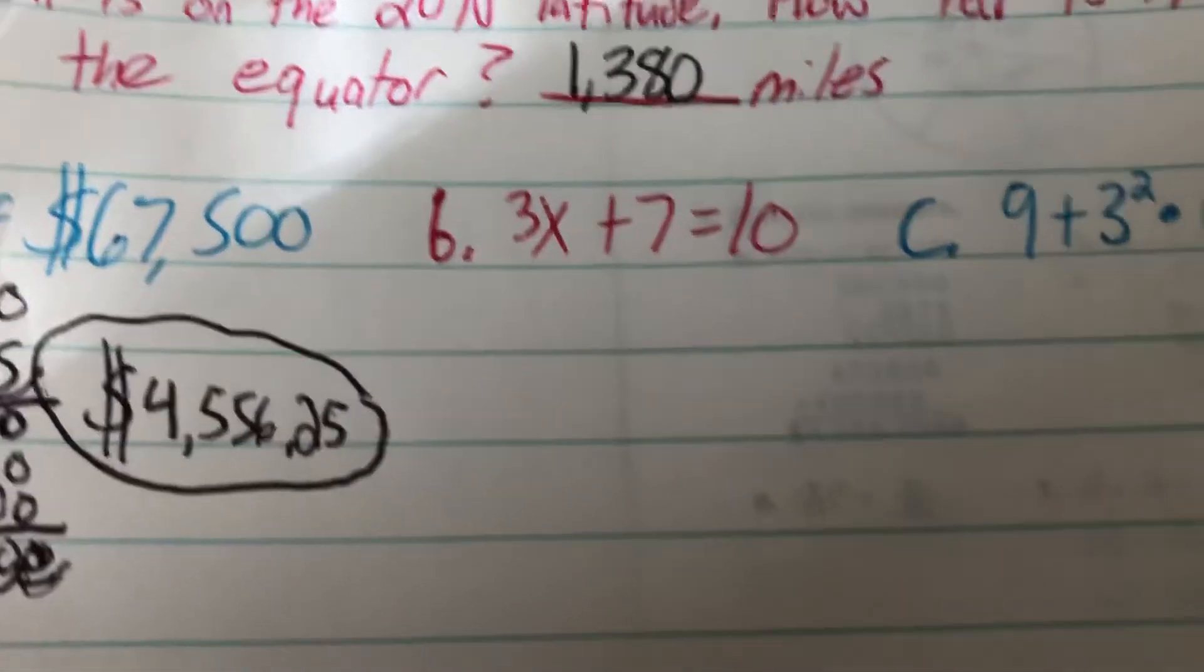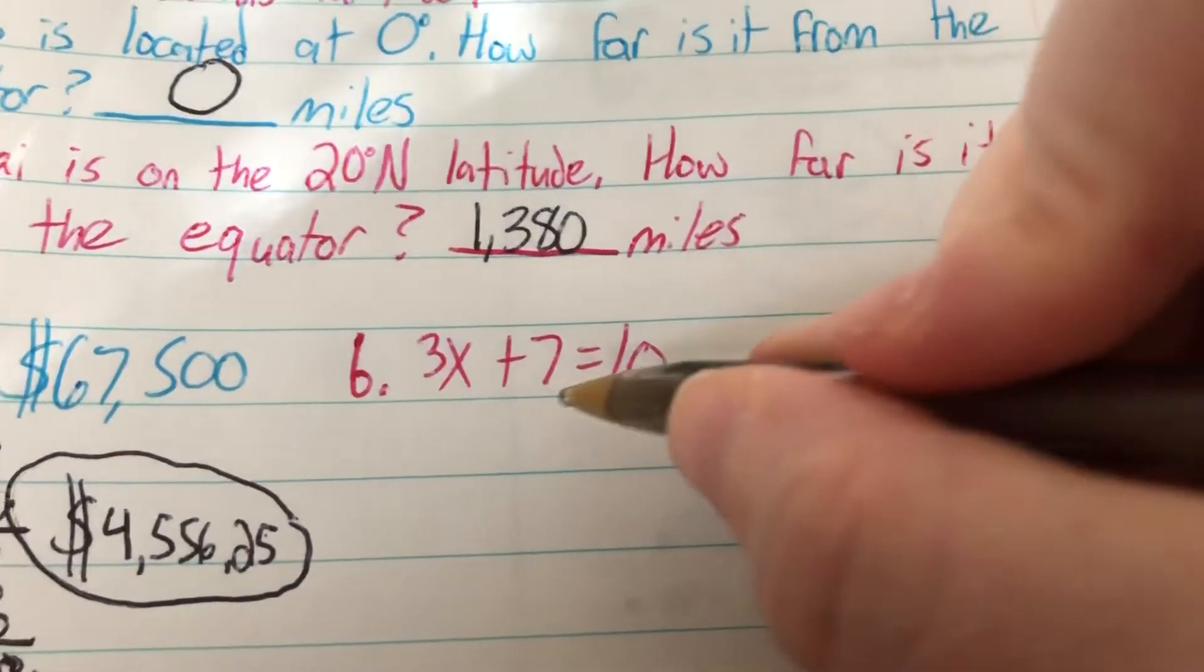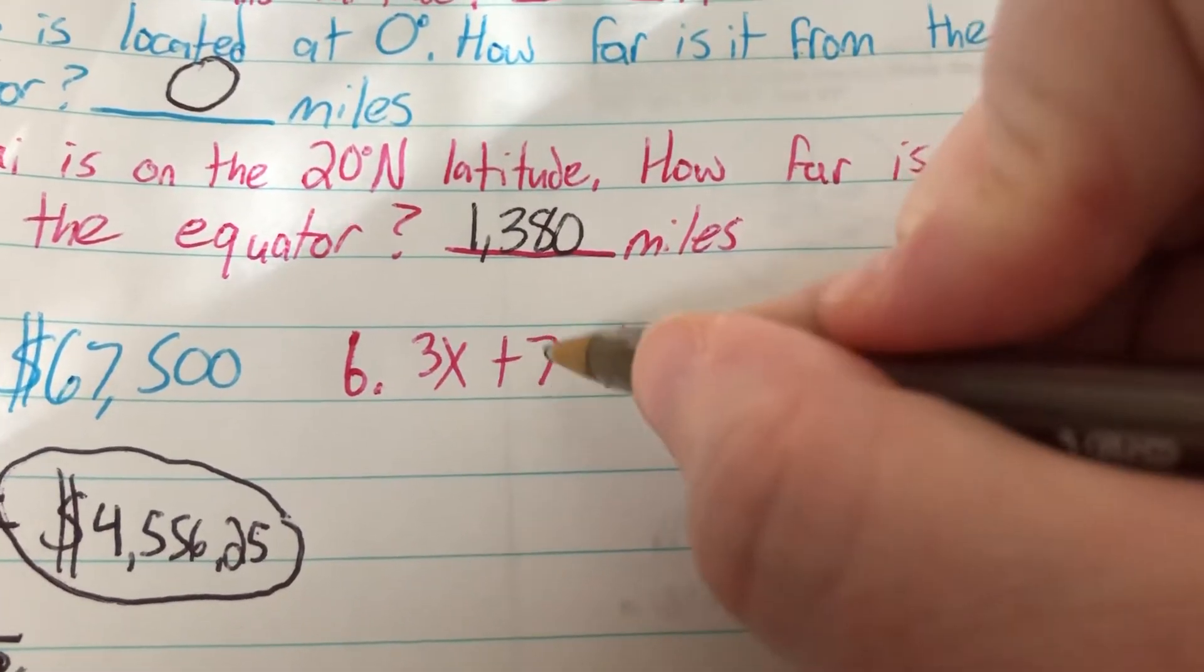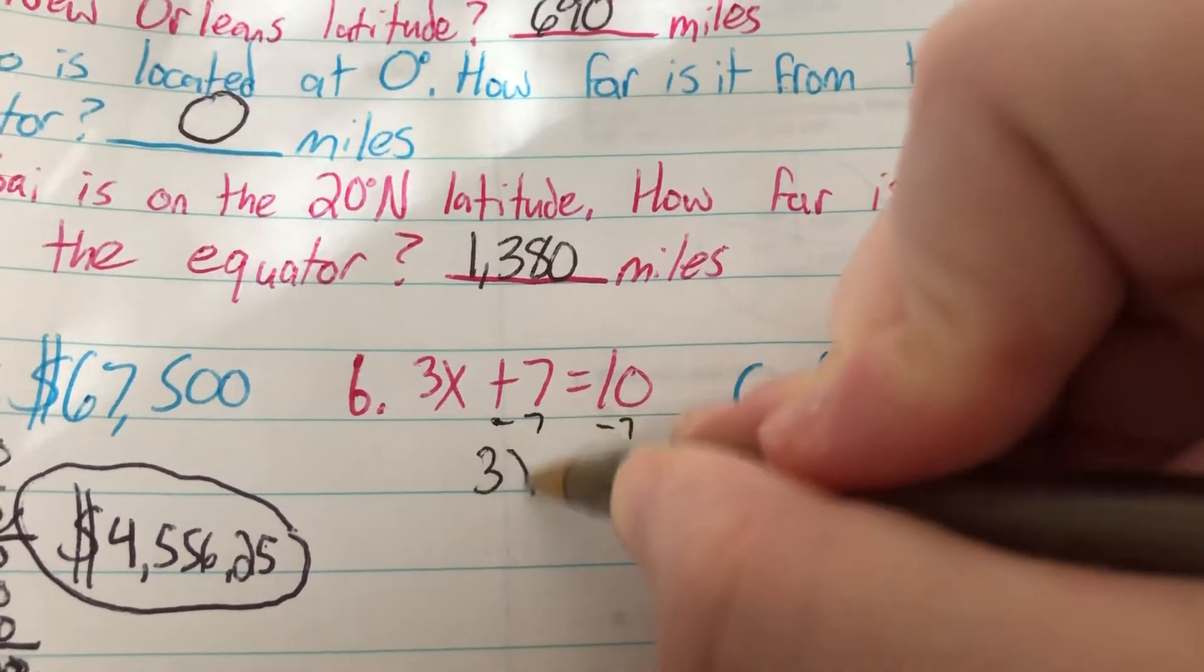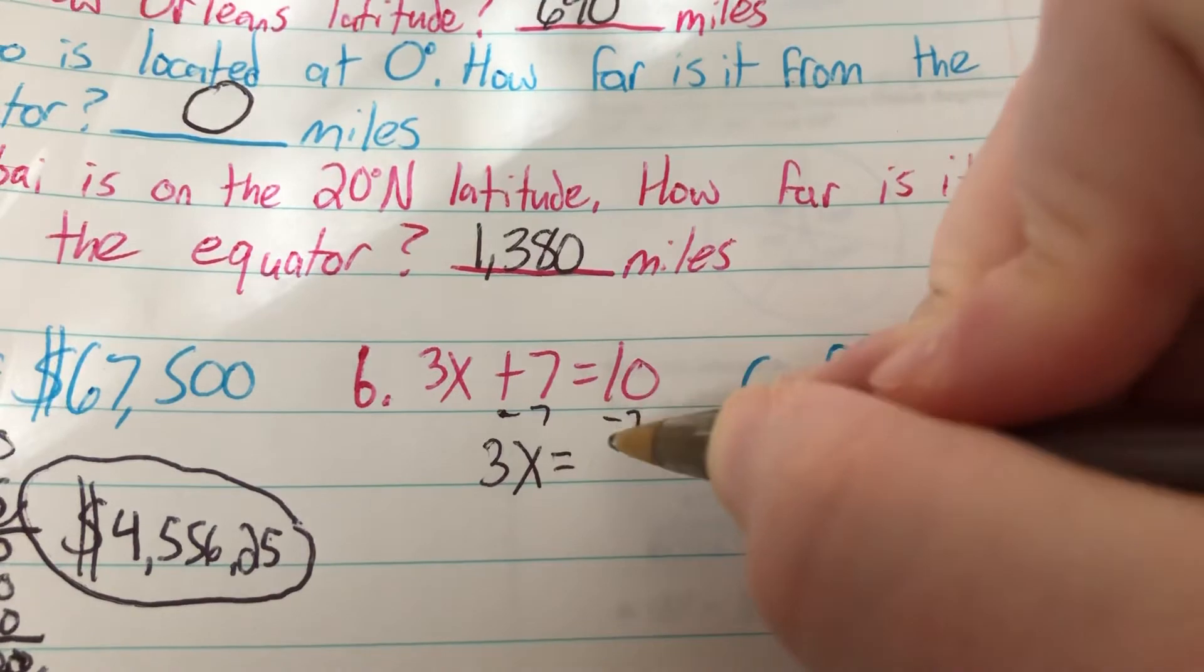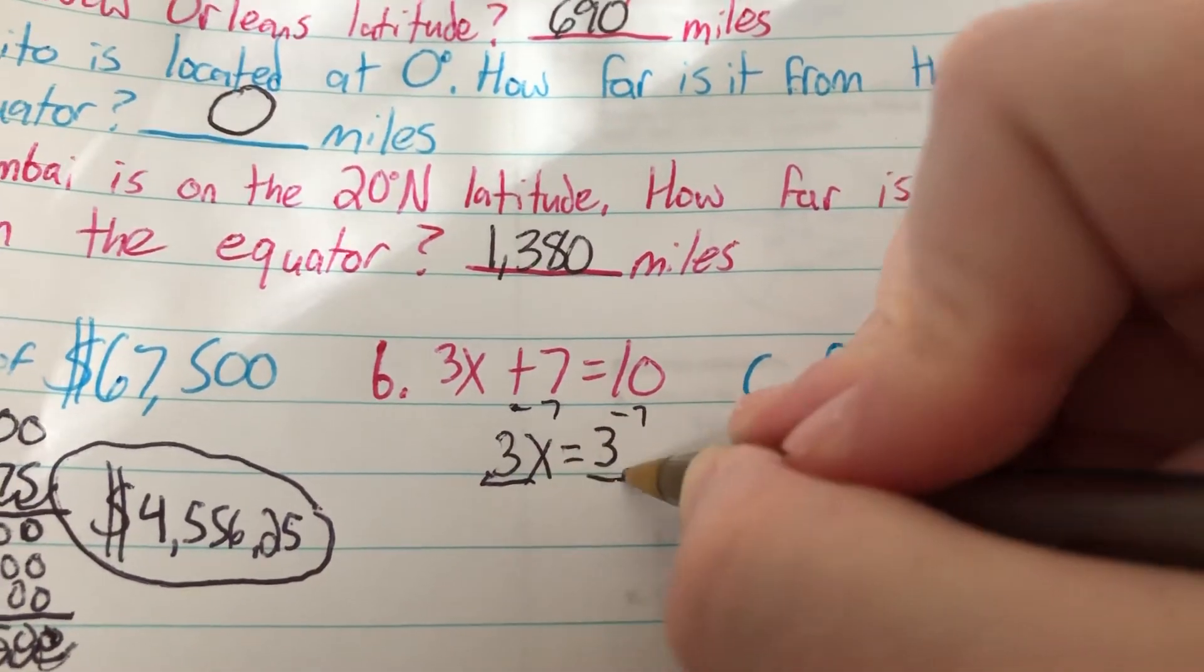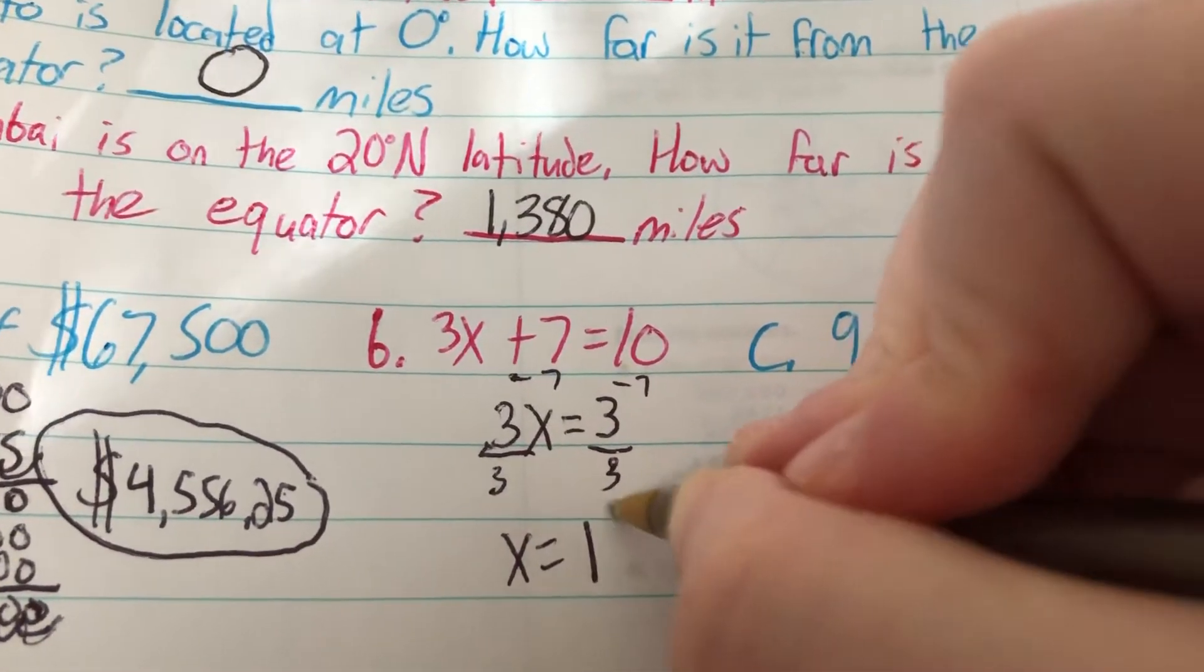On B, we have 3x plus 7 equals 10. Well, first we get the variable by itself. So we subtract 7 from both sides. So then we get 3x equals 10 minus 7, which is 3. Then we divide both sides by 3. So x equals 3 divided by 3, which is 1.